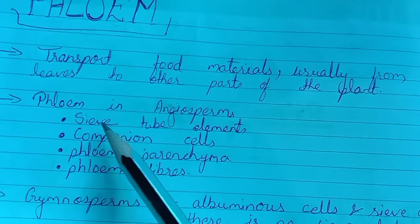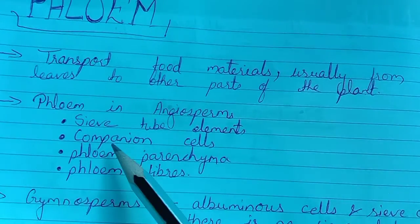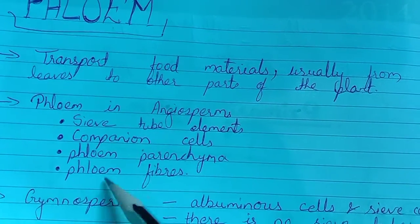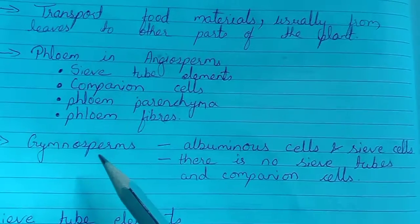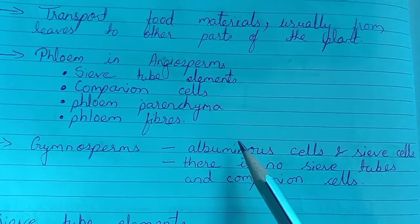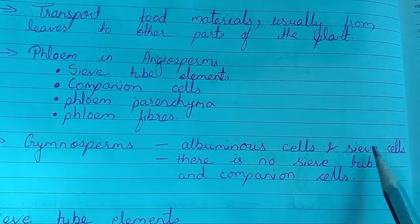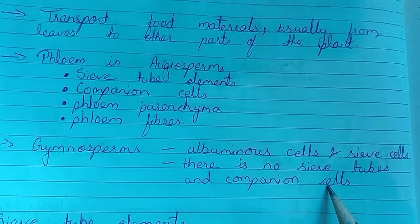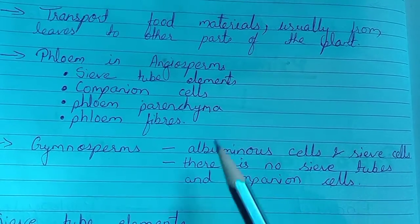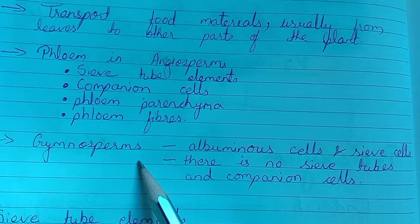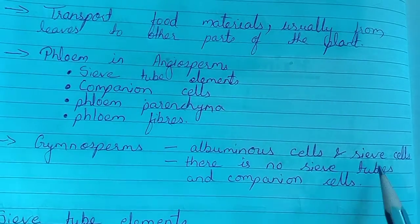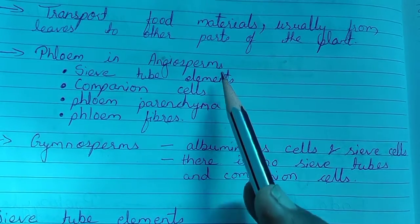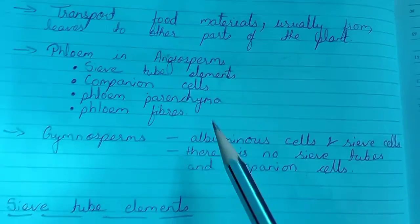Phloem consists of different types: sieve tube elements, companion cells, phloem parenchyma, and phloem fibers. Especially in gymnosperms, it has albuminous cells and sieve cells — there is no sieve tube and companion cell. That is the difference between angiosperm and gymnosperm, showing that angiosperms are more developed.